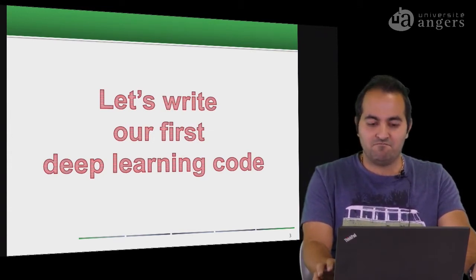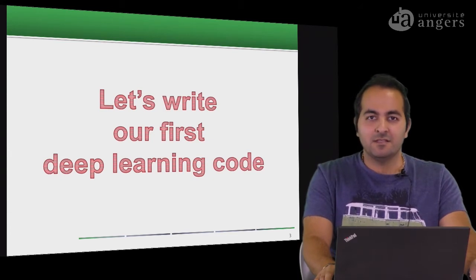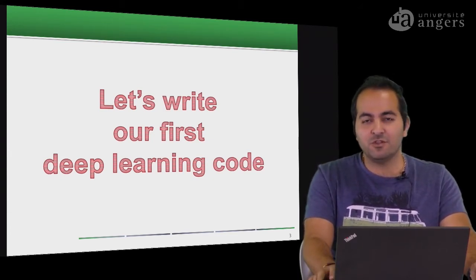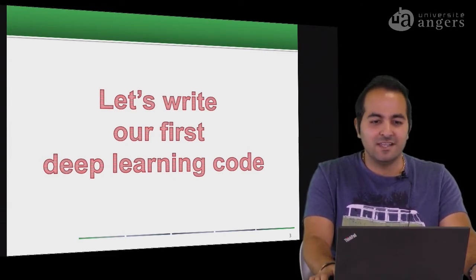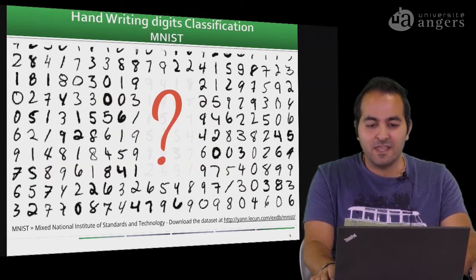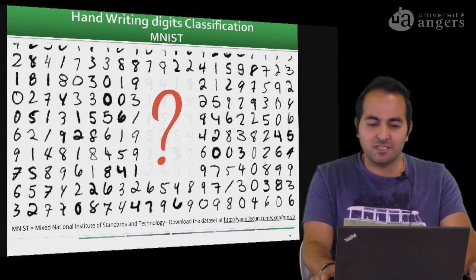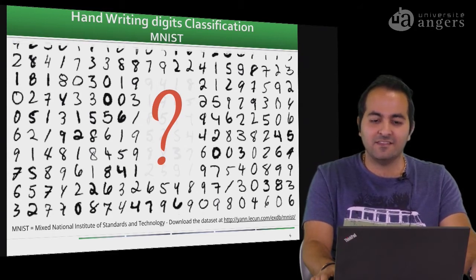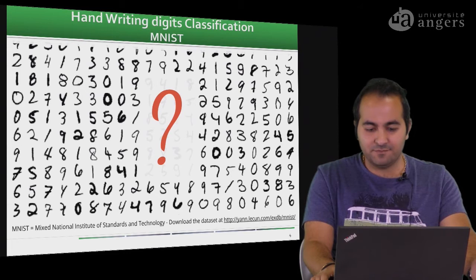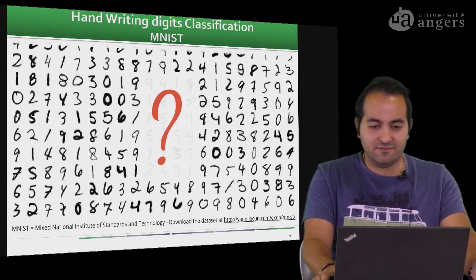We will start our course by writing code in deep learning. It is like the hello world — when you want to learn any programming language, you print hello world. But in machine learning and deep learning, the hello world example is digit classification. Digit classification is usually done using the database called MNIST, which is a handwritten digit classification dataset consisting of handwritten digits from 0 to 9, and we use it for digit classification.